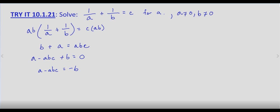And now on this left-hand side, we can factor out an a. So this is a times 1 minus bc equals negative b.